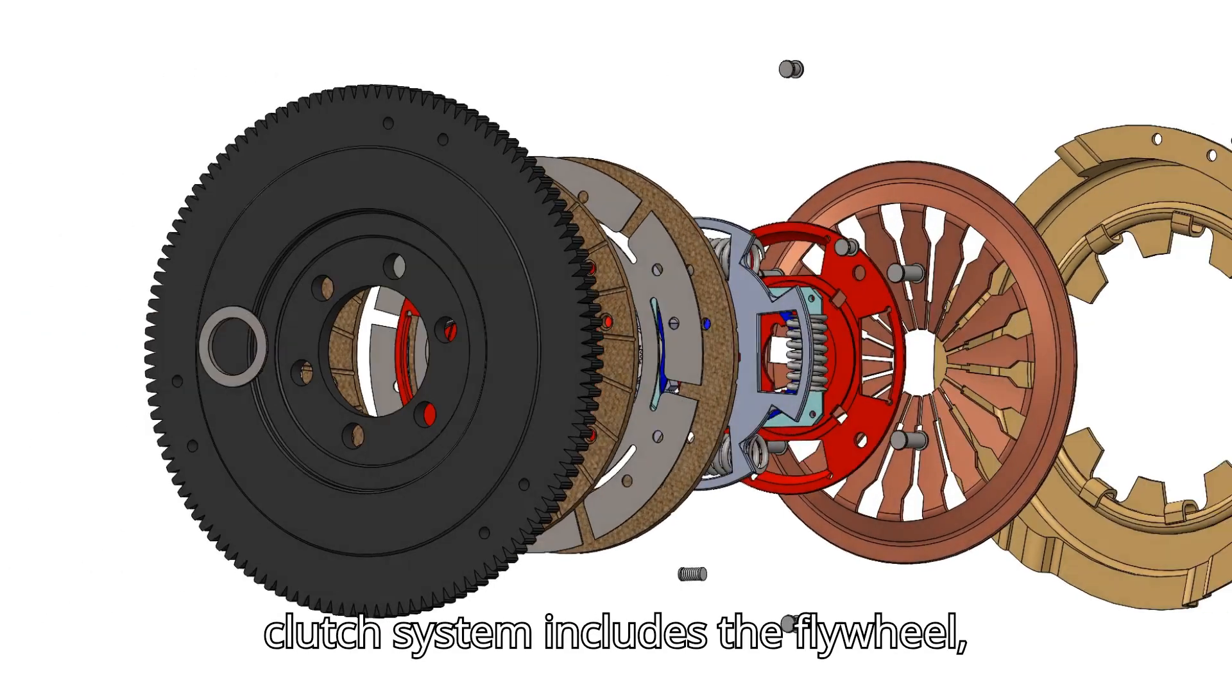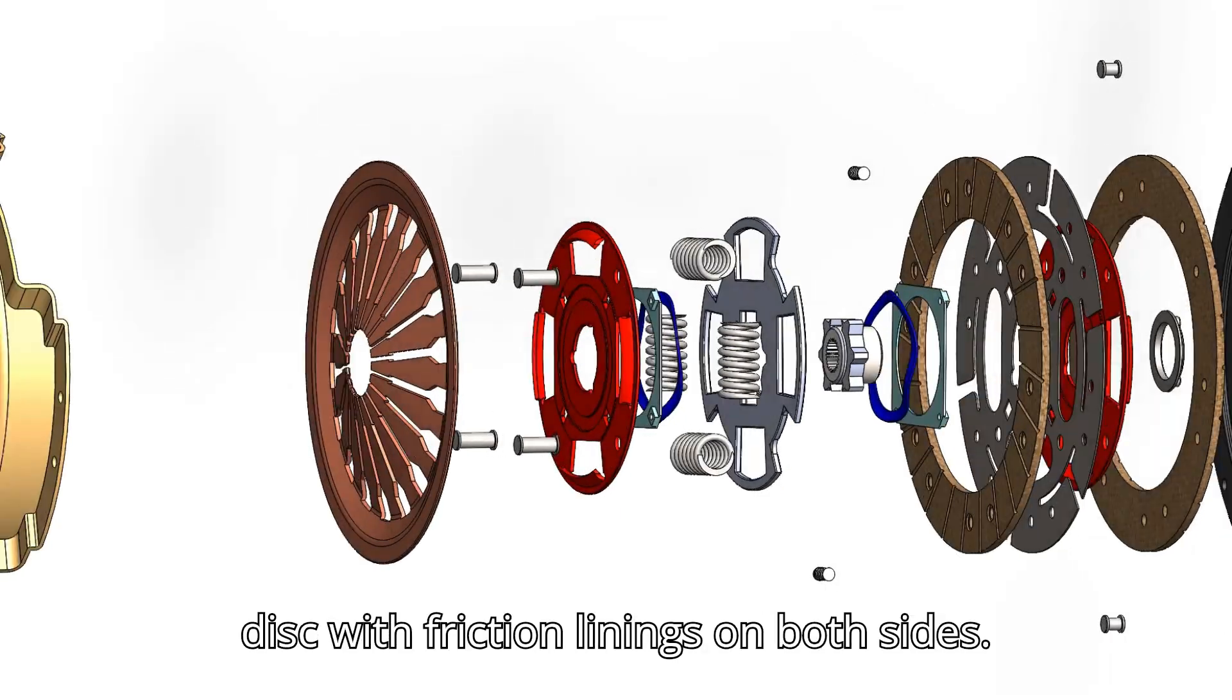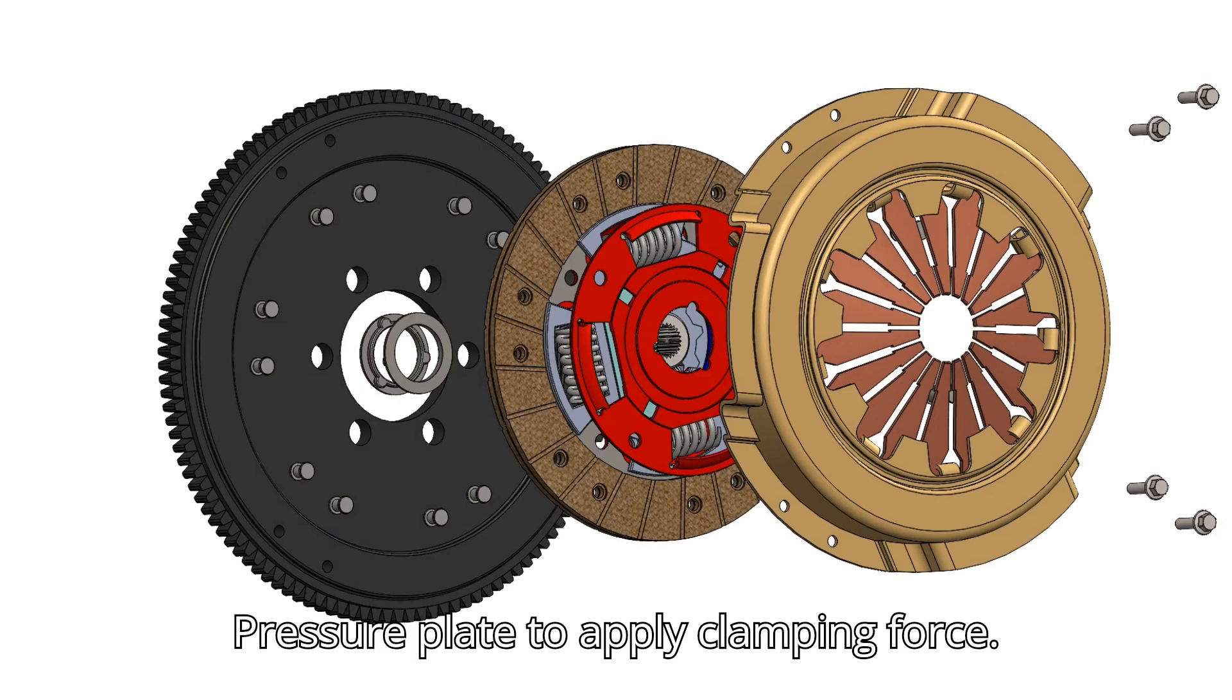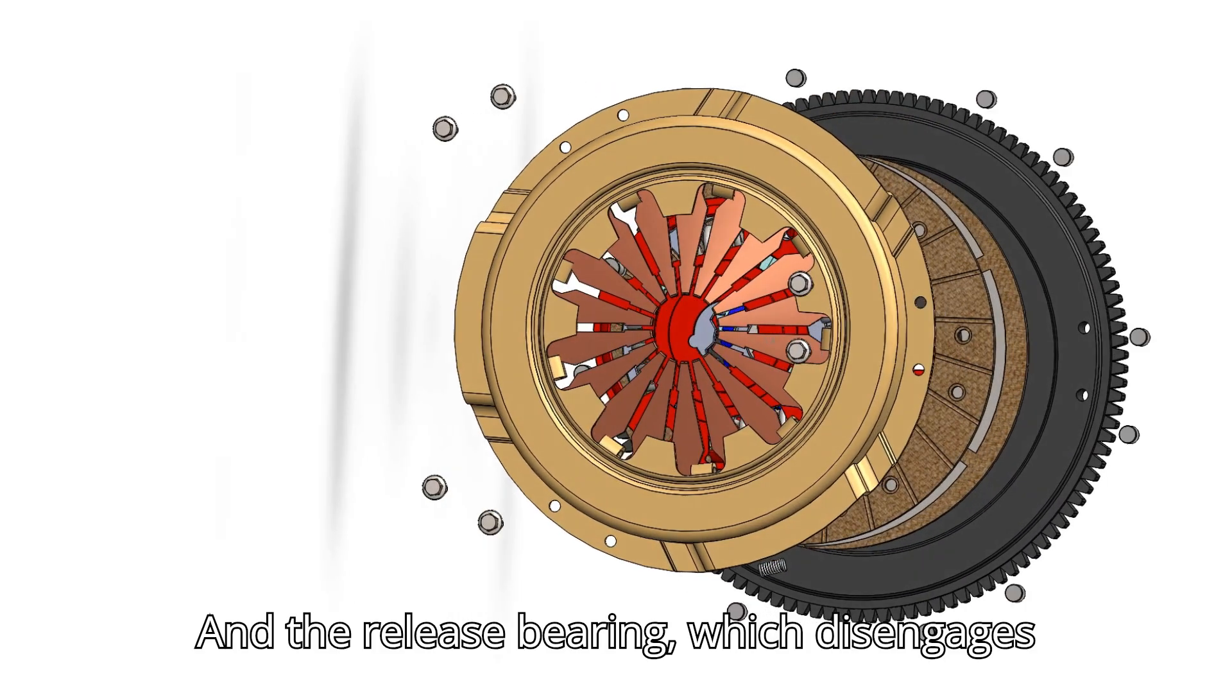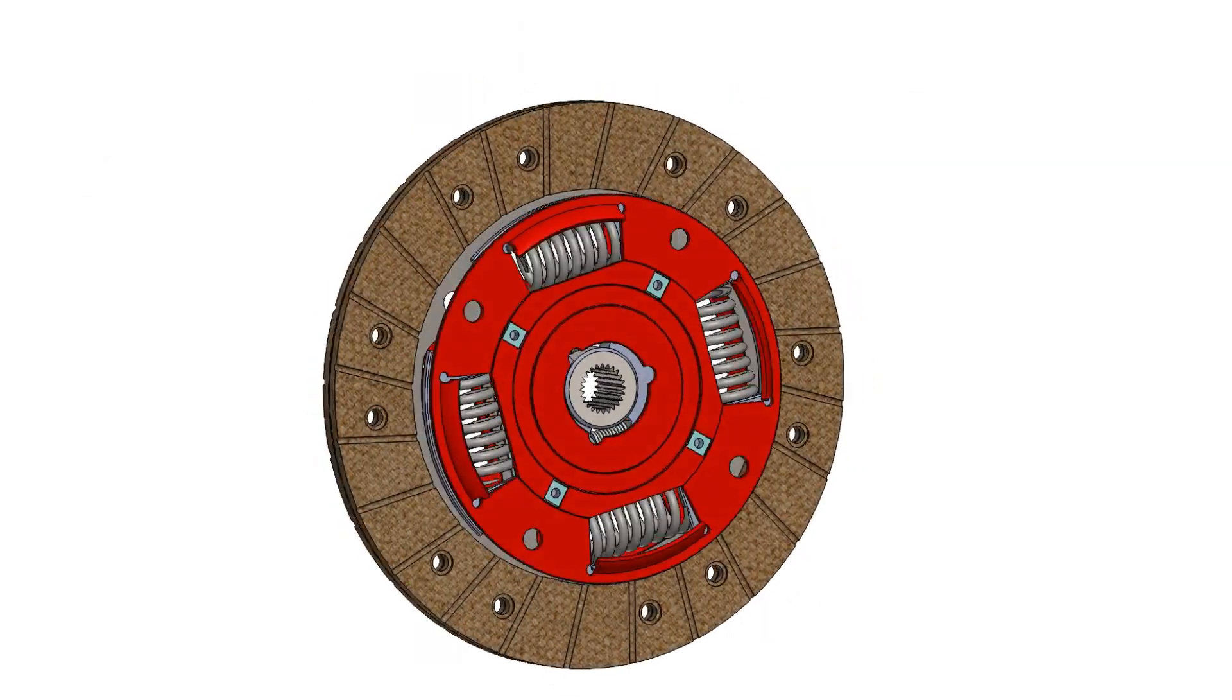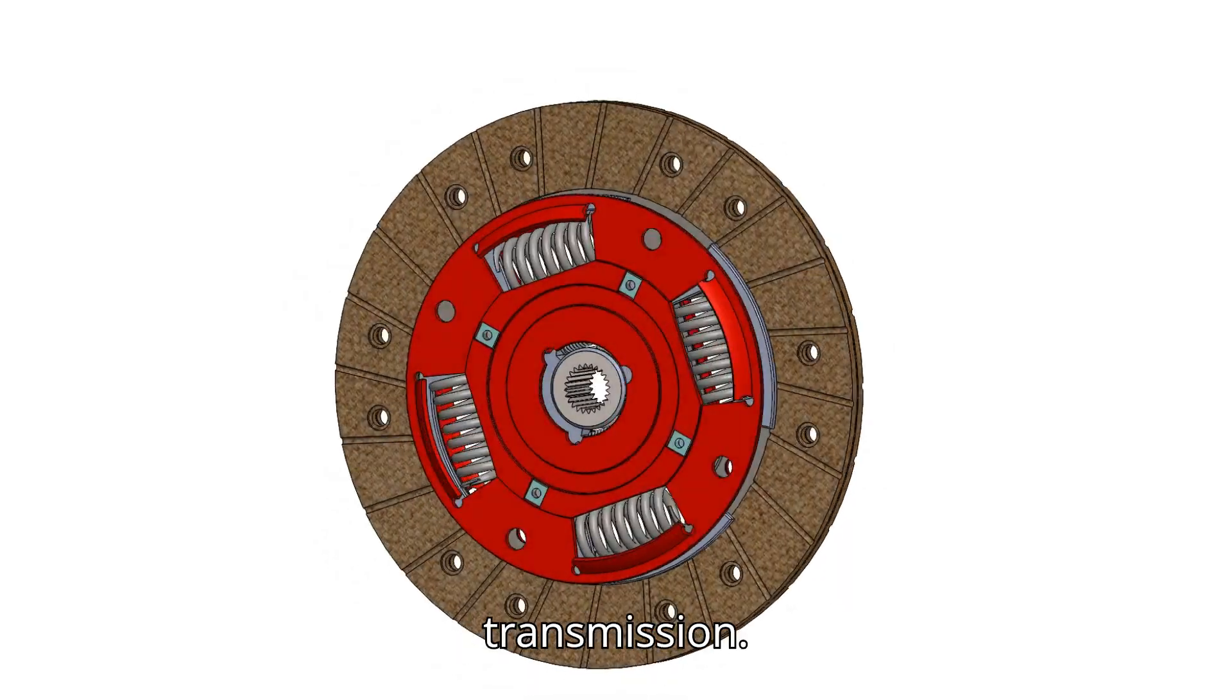The single-disc clutch system includes the flywheel connected to the engine, the clutch disc with friction linings on both sides, pressure plate to apply clamping force, diaphragm spring to control engagement, and the release bearing which disengages the clutch when the pedal is pressed. All parts work together to transmit or interrupt engine power to the transmission.